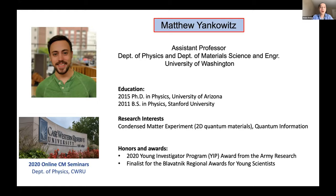Matt is known for his experimental study of novel electronic states in two-dimensional materials, including Dirac fermions in graphene and boron nitride and the superconductivity in twisted bilayer graphene. He has picked up several awards for his research achievement, including being one of the finalists for the 2019 Ballavanic regional awards for young scientists and recently receiving the young investigator program award from the army research office.